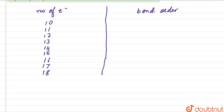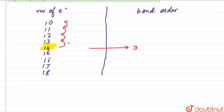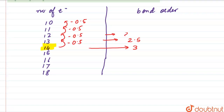Now we focus on the number of electrons equal to 14, which gives a bond order equal to 3. As we move from 14 down to 13, 12, 11, and 10, we decrease the bond order by 0.5 each time. So we get bond orders of 2.5, 2, 1.5, and 1 respectively.